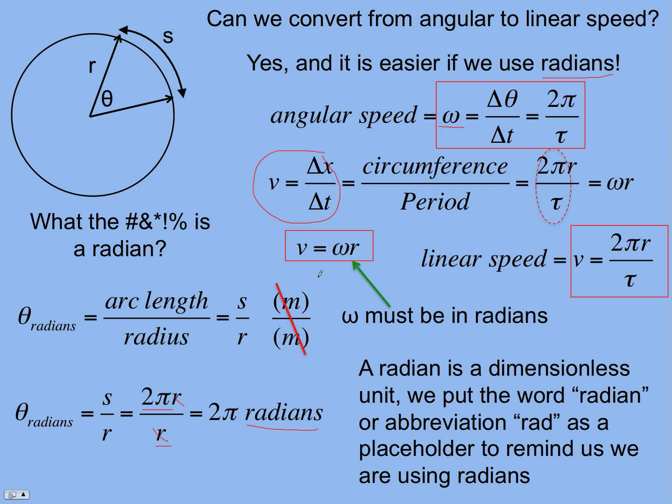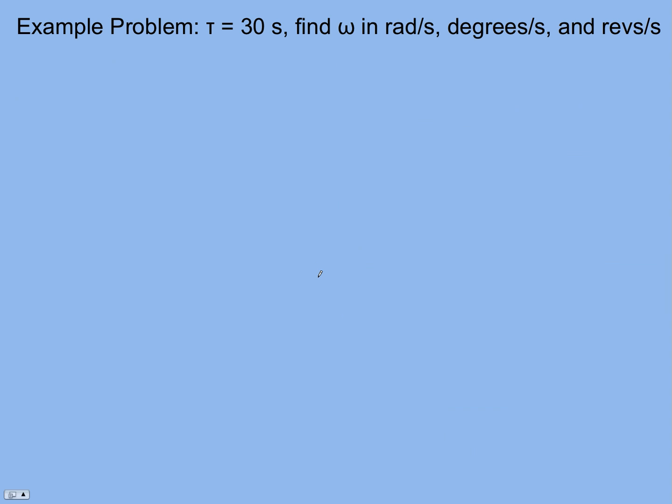Let's quickly do an example where you're converting. Sometimes we use radians, sometimes we use degrees. We can use revolutions. There are other ways to measure angles. So let's do a quick example problem. Let's say the period, that's supposed to be a tau there in a different font, is 30 seconds for something going in a circle. Find the angular speed, but we want it in all three different kinds of units here. Write down this. If you're skipping this step and you're having trouble, that's why. Write that down. If I want radians, 2π radians over the period, 2π radians over 30 seconds, 0.21 radians per second. Pretty easy.